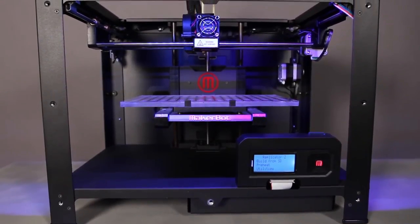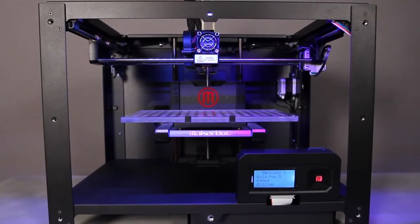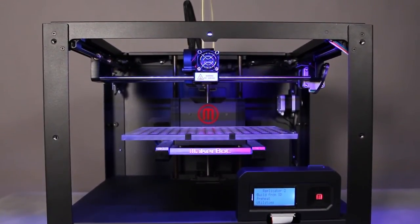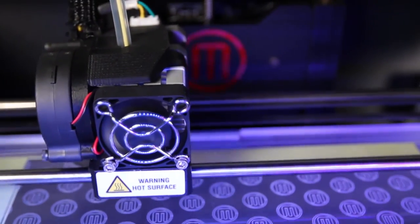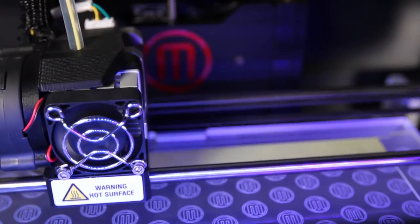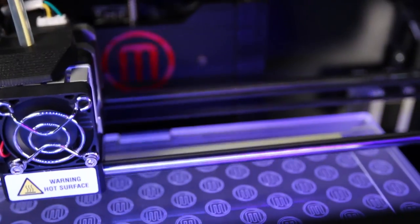We've given the MakerBot Replicator 2 desktop 3D printer a powder-coated steel chassis. This makes it incredibly durable, and the stability it offers allows the machine to cruise at incredibly high speeds and make your things faster.